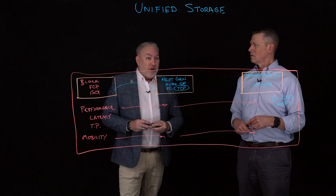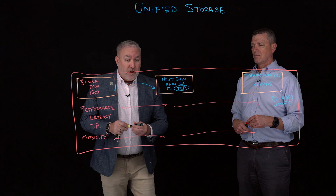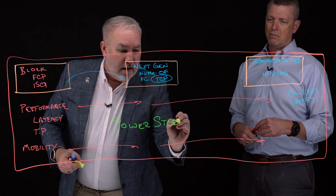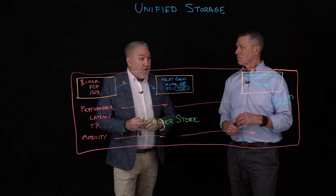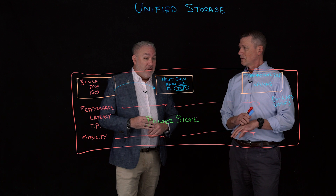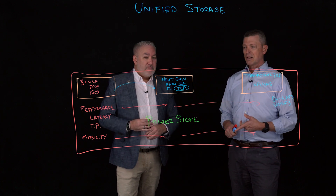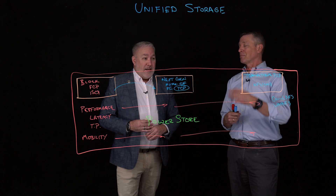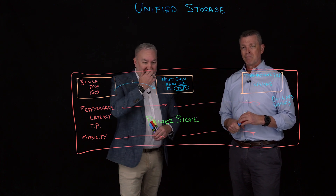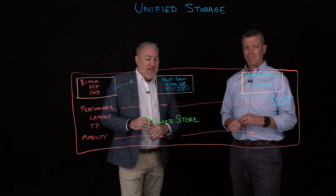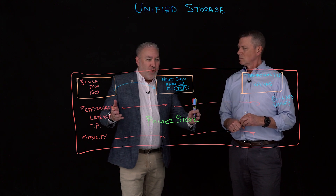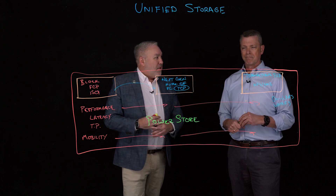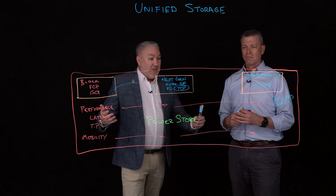PowerStore delivers that solution: regardless of whether it's your traditional way of doing block, the next-gen way of doing block, or high-performance transactional file capability for next-generation applications, PowerStore is a good answer. No compromise on performance, no compromise on mobility, simplified usage, and future-proofed in terms of where those workloads may go. That's a pretty powerful story. Just imagine the entirety of that ecosystem as a single storage pool — whether it's heritage block, next-gen block, or transactional file, it's all part of the deduplication and compression in a global profile. PowerStore's efficiency plays very strong here.